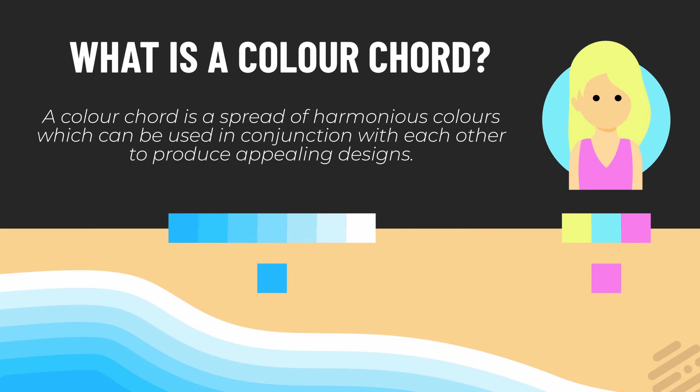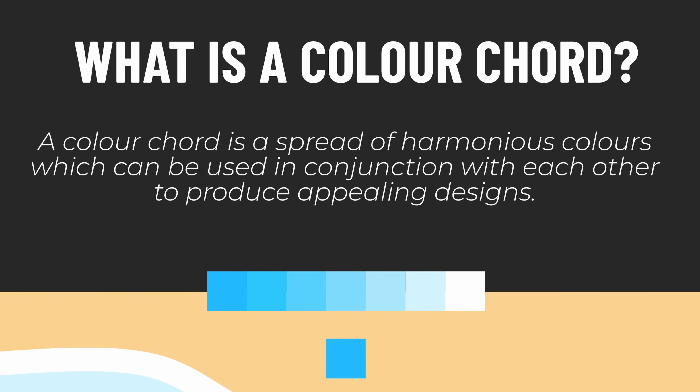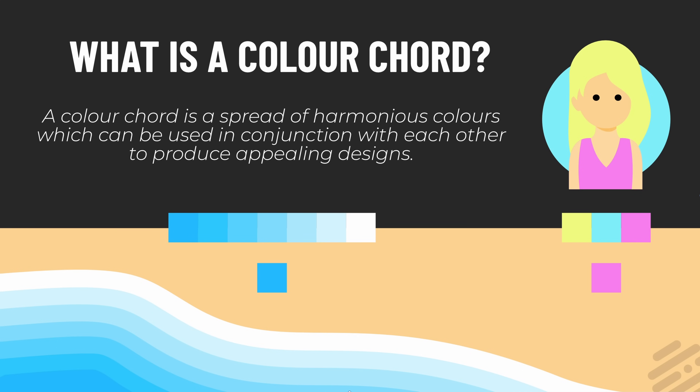So what is a color cord? According to Affinity Designer's website, a color cord is a spread of harmonious colors which can be used in conjunction with each other to produce appealing designs. To put it extremely simply, a color cord will help you choose colors that really work together, or tones, shades and tints of a color that will work. You can see underneath here I have a couple of examples of what a color cord will look like.